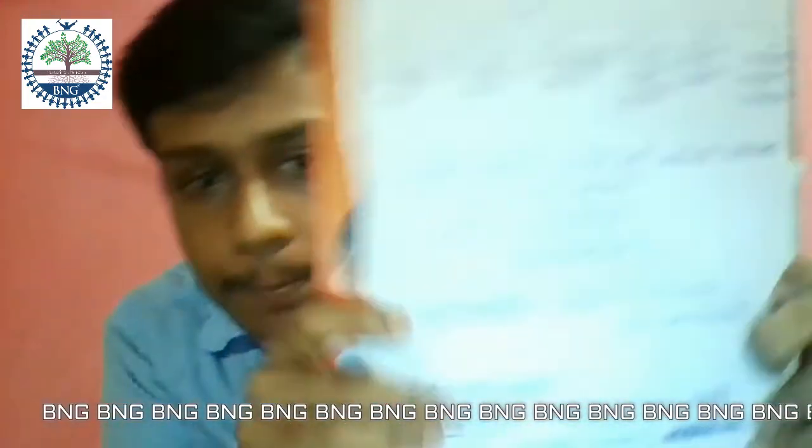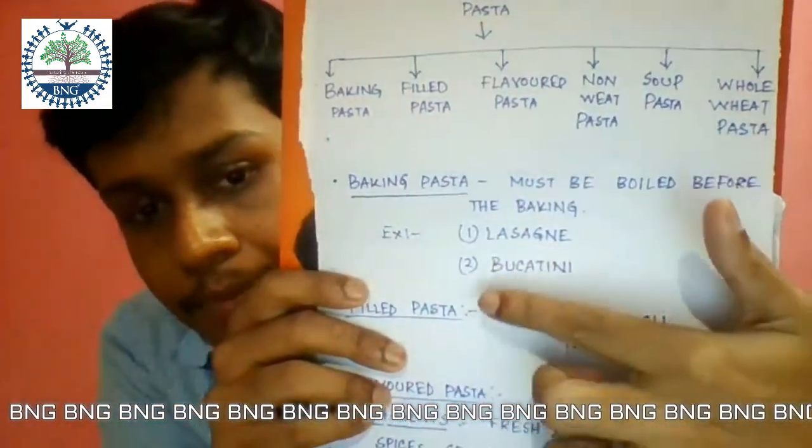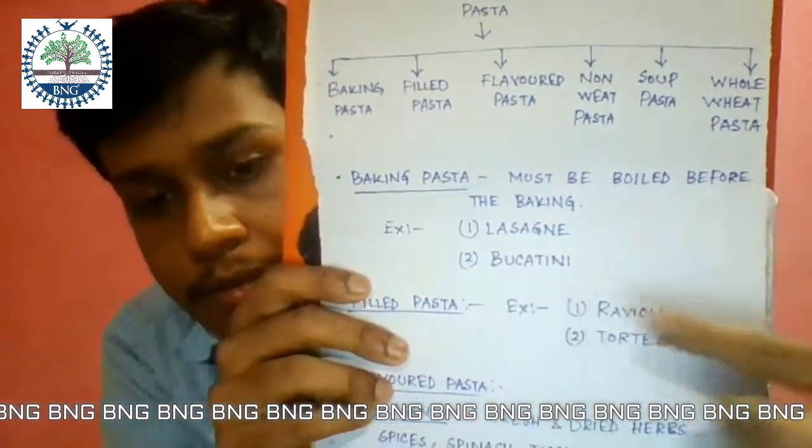First, baking pasta. Just like its name, the cooking process of this type of pasta is baking. But the pasta should be boiled before it is baked. Examples of baking pasta are lasagna and bucate.